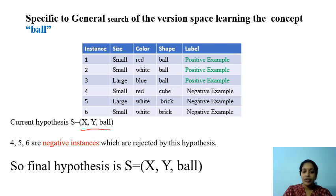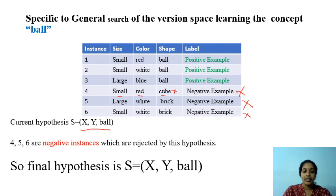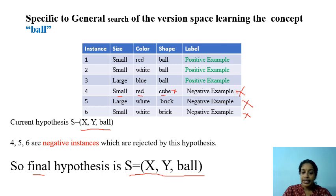Iterating further, we encounter a negative instance. We check whether our hypothesis can reject it: x accepts any size value, y accepts any color value, but ball versus cube — that is rejected. So our hypothesis rejects this negative example. Going forward, we encounter two more negative instances (5 and 6), and using our current hypothesis both are clearly rejected. Finally, our hypothesis (x, y, ball) is able to accept all positive instances and reject all negative instances.